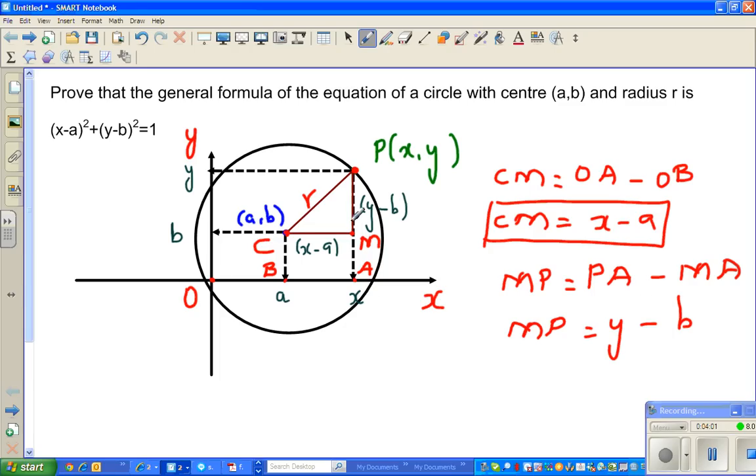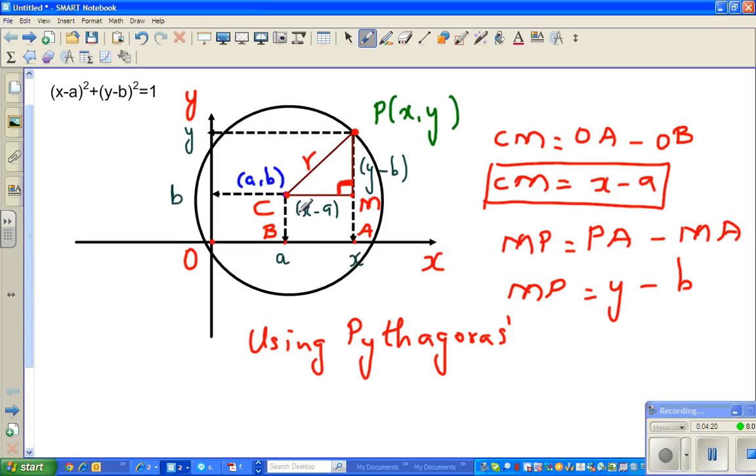Now this has become a right angle triangle, and I can use Pythagoras theorem. So using Pythagoras theorem, can I say this squared plus this squared is equal to r squared. So I can say (x-a)² + (y-b)² = r².